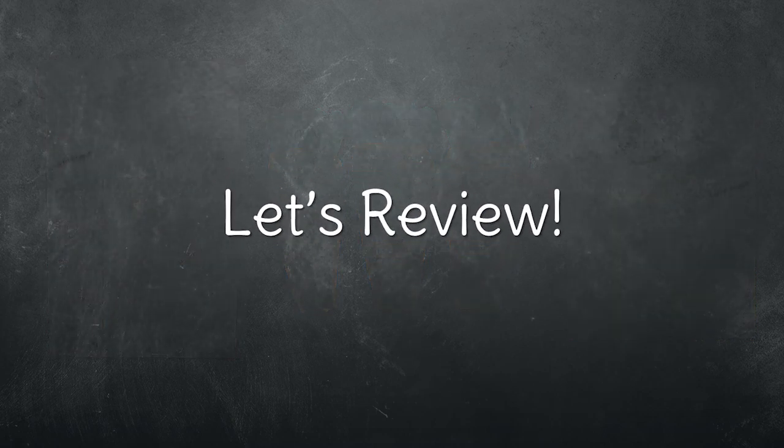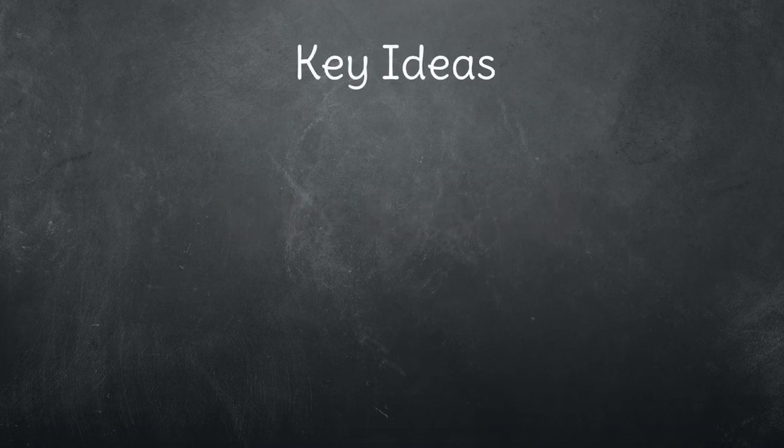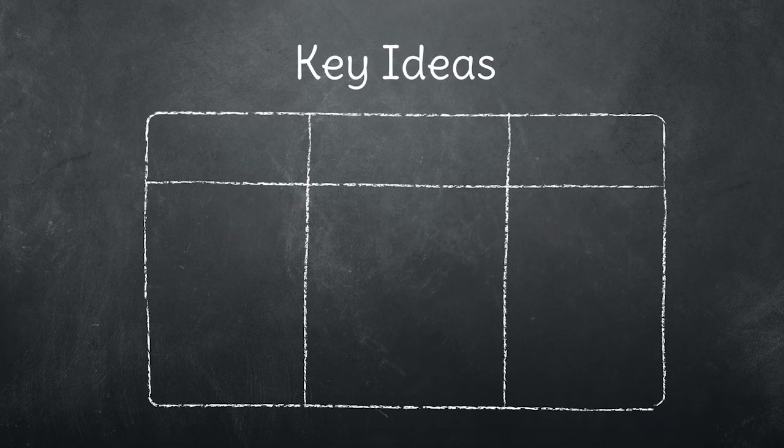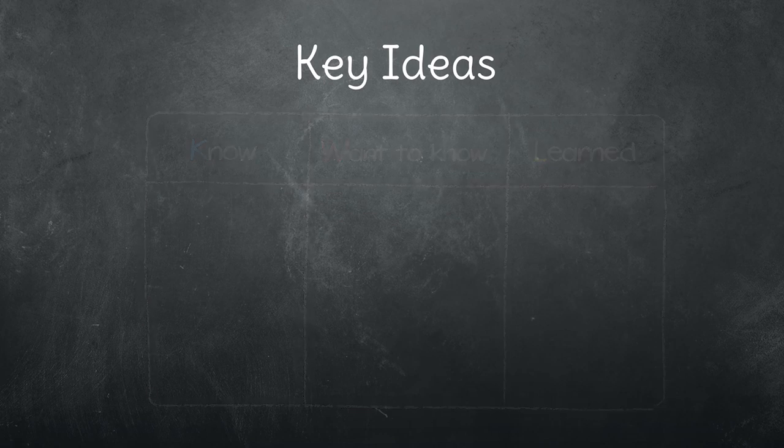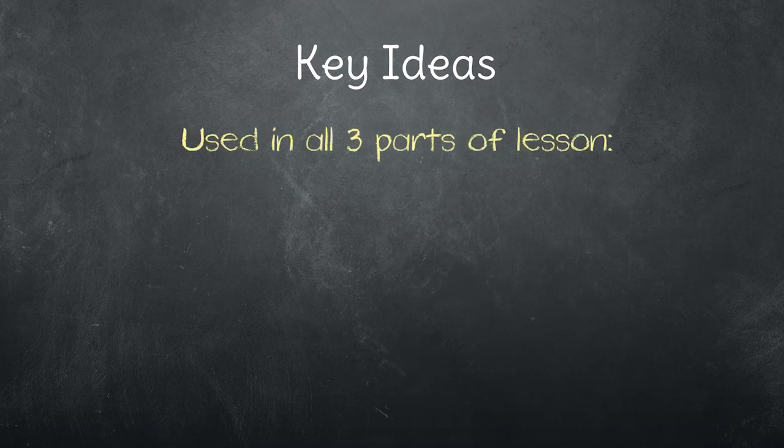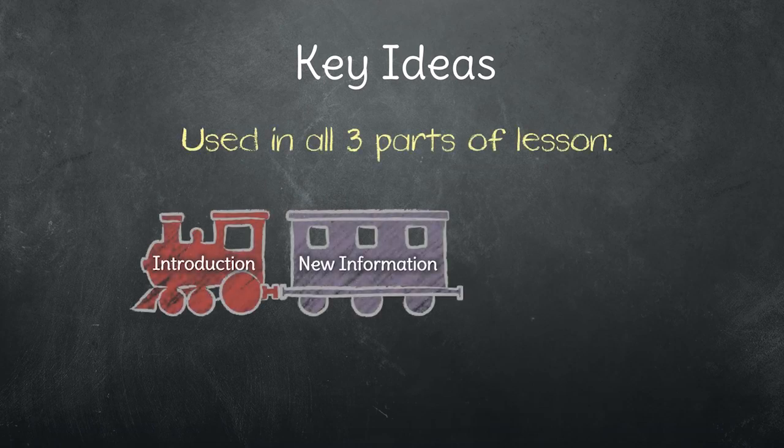Let's review. KWL uses a chart to show what students already know about the lesson topic, what they want to know, and what they learn. KWL is used in all three parts of the lesson: the introduction, the new information, and the review.